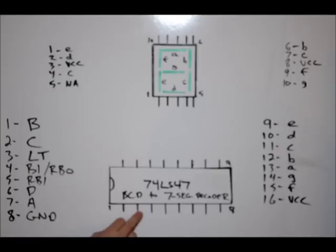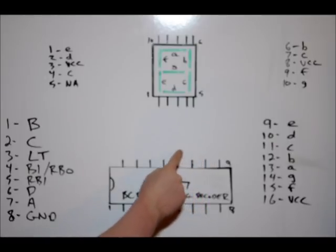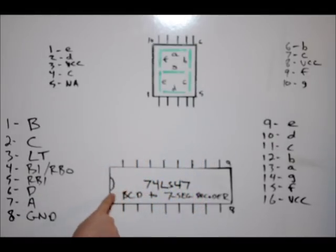Pin 1, 2, 3, 4, 5, 6, 7, 8. So I've labeled 1 and 8, then 9, 10, 11, 12, 13, 14, 15, 16. There is a notch on the left hand side of the chip to tell you which is pin 1. Pin 1 is always just below that notch.